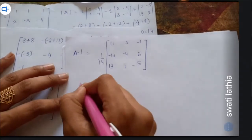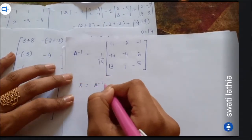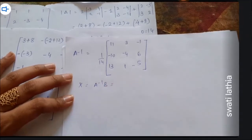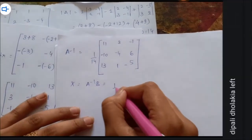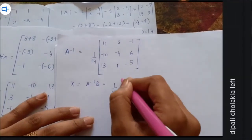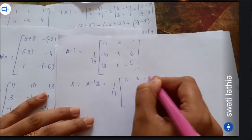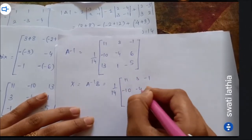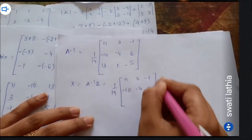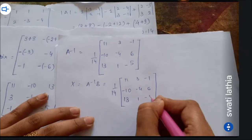Now X = A inverse × B = (1/14) × [11, 3, -1; 10, -4, 6; 13, 1, -5] multiplied by B.